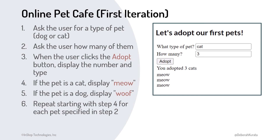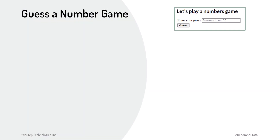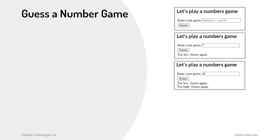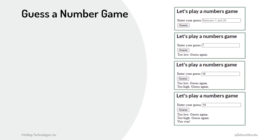Want to give it a try? Here's another task. For this example, we want to create a number guessing game. The computer should randomly pick a number between 1 and 20, and the player guesses the number. The computer then tells the player if the guess is too low, too high, or correct. If the player guesses wrong, they can guess again. Pause the video now if you want to break this task into a set of instructions using pseudocode, like we did for our pet cafe.